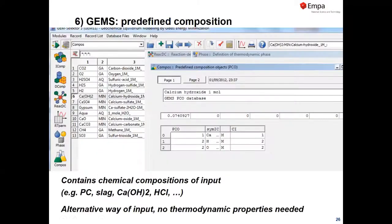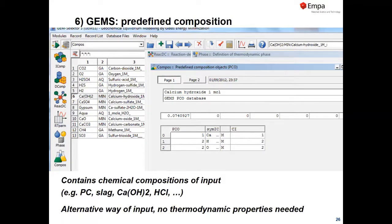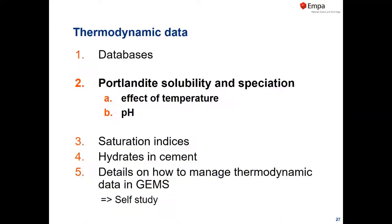The last button is COMPOS — predefined compositions — which we've already used in exercises. For calcium hydroxide defined as a COMPOS entry, you can see the chemical composition: 1 calcium, 2 hydrogen, 2 oxygen, giving a molecular weight of 74 g/mol. We can define Portland cement, slag, fly ash, or whatever we want as input. There's no thermodynamic data in COMPOS — it's just chemical formulas.